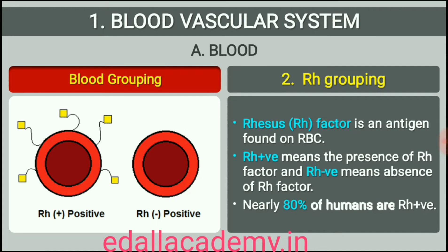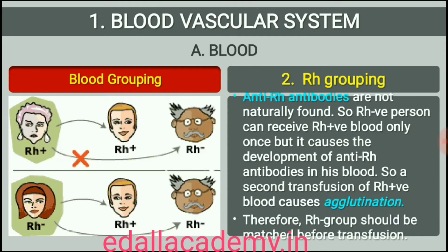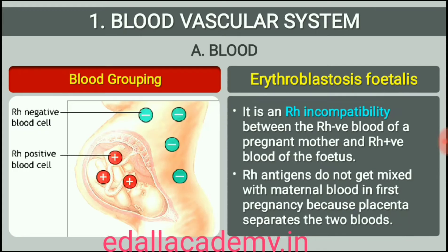Rh Grouping. Another antigen, the Rh antigen similar to one present in rhesus monkeys, hence Rh, is also observed on the surface of RBCs of majority, nearly 80% of humans. Such individuals are called Rh positive, and those in whom this antigen is absent are called Rh negative. An Rh negative person, if exposed to Rh positive blood, will form specific antibodies against the Rh antigens. Therefore, Rh group should also be matched before transfusions.